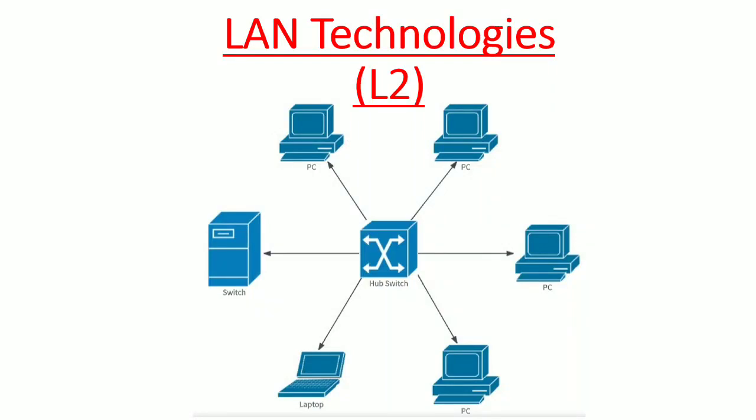Hi and welcome. In this video I will discuss certain local area network technologies which operate at layer 2 of the OSI model, that is the data link layer. A local area network is a network of computers which interconnects computers in a limited area, for example a building, a floor, or adjacent buildings, and according to some sources this distance is limited to 1 kilometer.